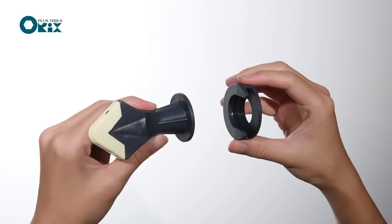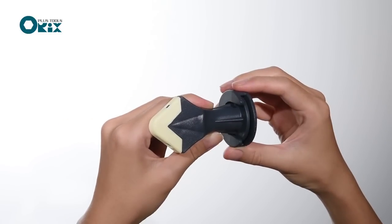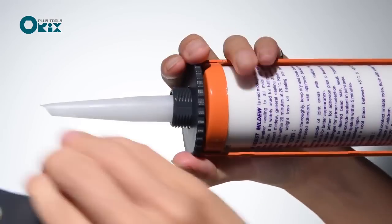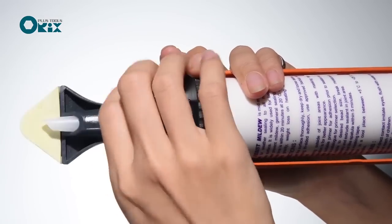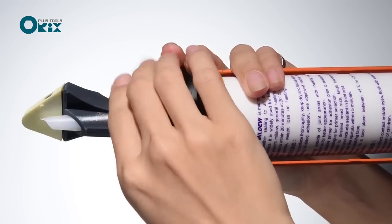Take the nozzle pad head and slide it into the adapter. Take the nozzle pad head and adapter assembly and screw on the threaded base.